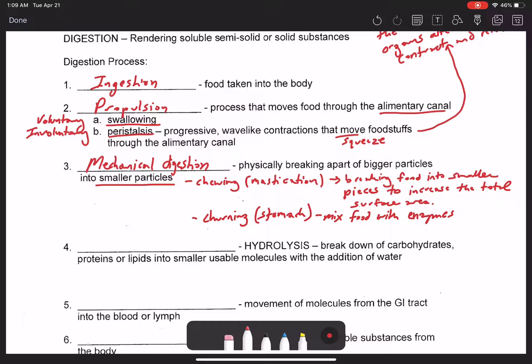And then also we have segmentation which occurs in the small intestine. And this is where we have the non-adjacent segments of the alimentary canal contracting and relaxing.